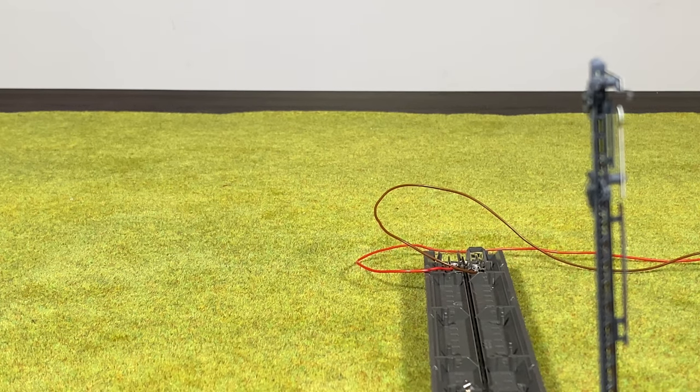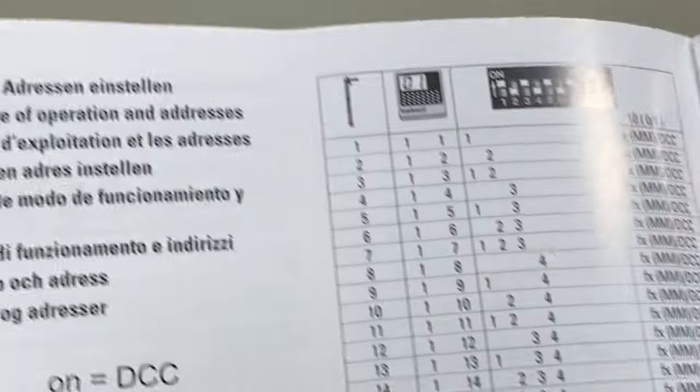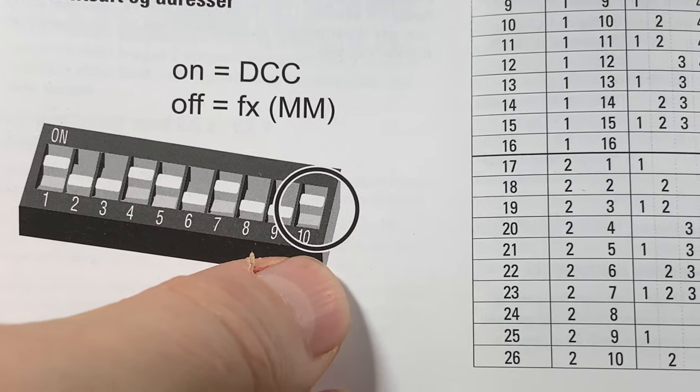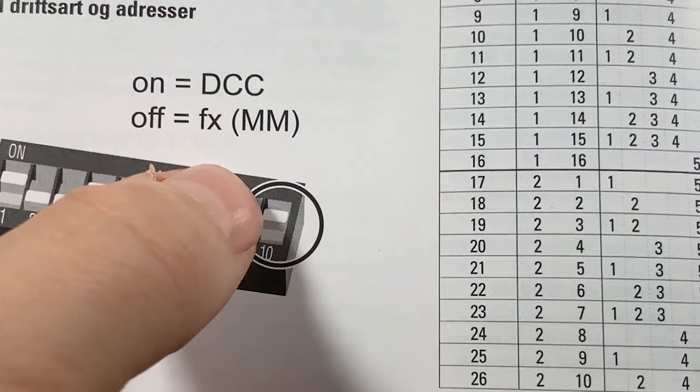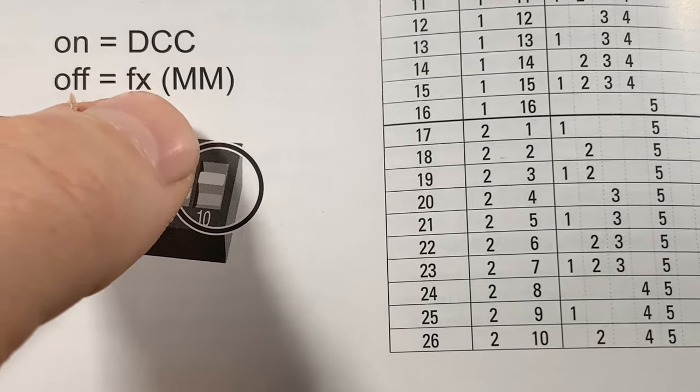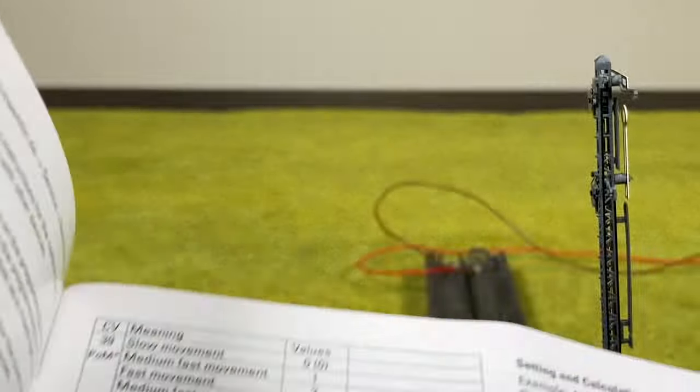Let me just double check. If we have the manual here you see the last one here. Number 10 is the one where we can change between DCC and Märklin. What I want to do now is put it in DCC mode, program it, and then put it back into Märklin mode.